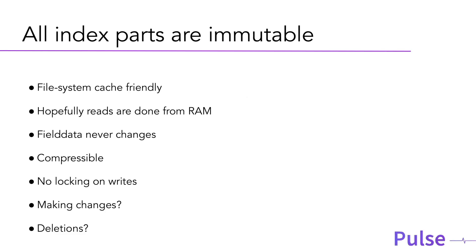All index parts are immutable — everything I just showed you is immutable. When you add a new document or update an existing document in OpenSearch, the data is not actually being updated. What's happening is that OpenSearch and Lucene under the hood are continuously writing new data. When new data updates old data, there's this concept of deletion markers that it keeps. When you update or delete a document, you're actually writing a new document with a deletion marker instead of updating the old one, which adds some technical debt that has to be cleaned up.